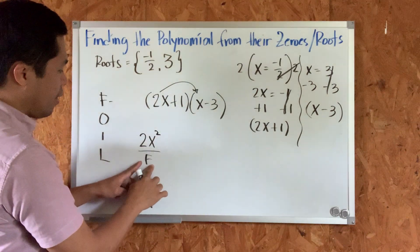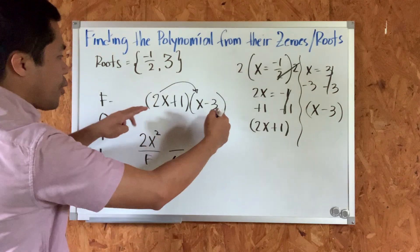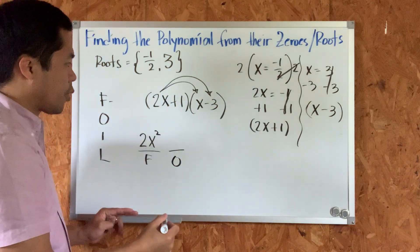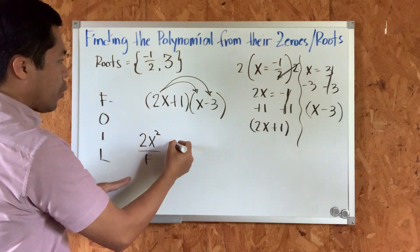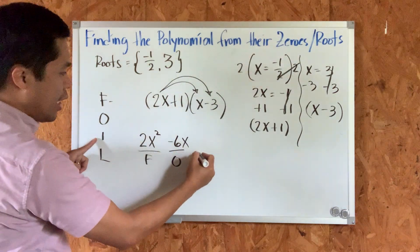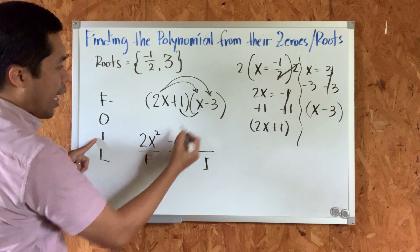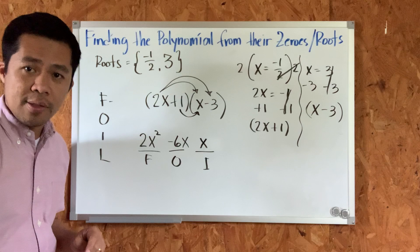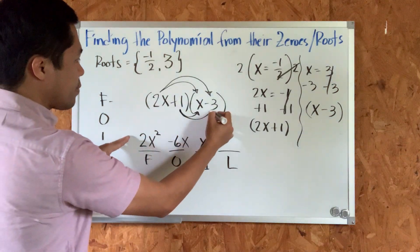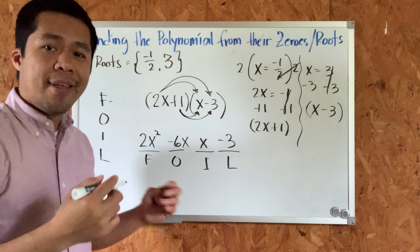Next is O, meaning outer terms. The outer terms are two x and negative three. Multiplying those gives us negative six x. Next is I, the inner terms: one times x gives us positive x. And finally L, the last terms: one times negative three gives us negative three.